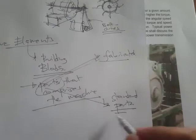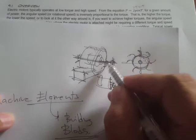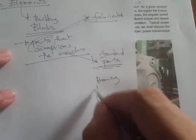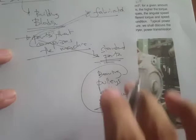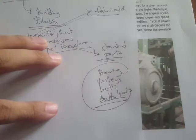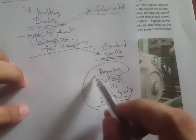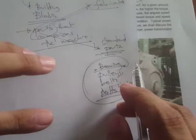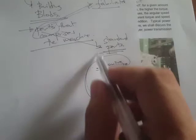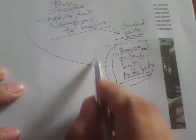Standard parts include bearings that support the shaft, pulleys, belts, bolts, and nuts. For standard parts, you simply buy them as-is — you are not going to design or manufacture a bearing or a belt; you just get them off the shelf.